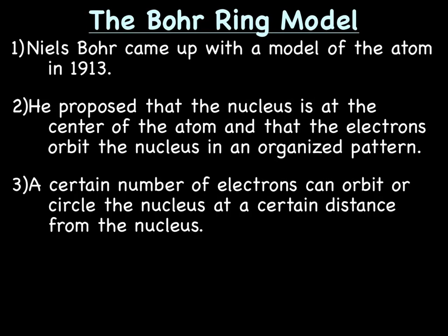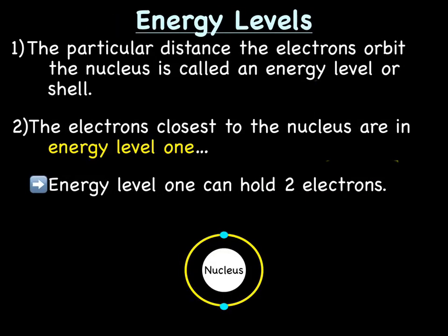The Bohr ring model. Niels Bohr came up with this model of the atom in 1913. We will discuss later how Bohr came up with this model, but for now just know that this guy named Bohr came up with this particular model. He proposed that the nucleus is at the center of the atom and that the electrons orbit or circle the nucleus in an organized pattern. And we'll spend the next couple of slides talking about this organized pattern. In Bohr's model, a certain number of electrons can orbit or circle the nucleus at a certain distance from the nucleus.